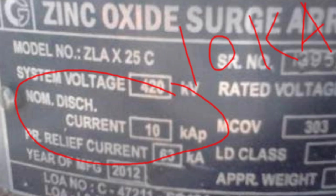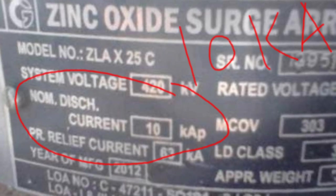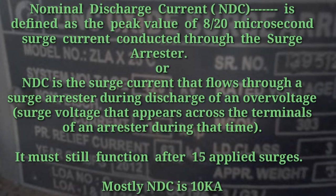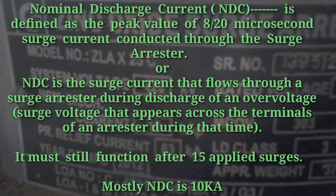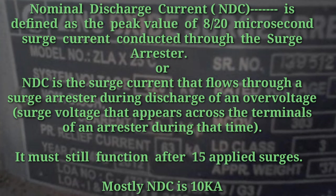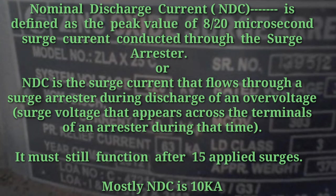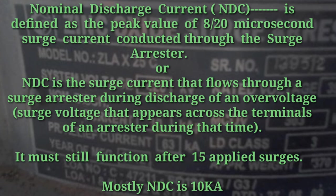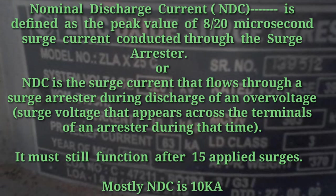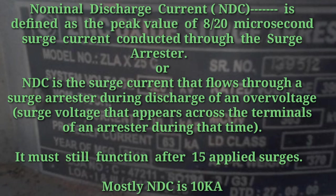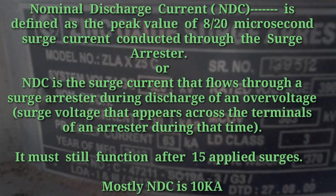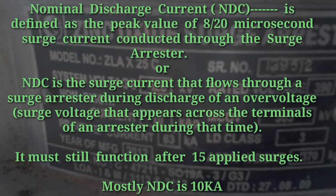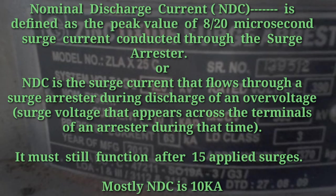Now nominal discharge current — here it is 10 kiloamperes. Nominal discharge current (NDC) is defined as the peak value of a 8/20 microsecond surge current conducted through the surge arrestor. Or NDC is the surge current that flows through a surge arrestor during discharge of an overvoltage. The surge voltage that appears across the terminals of an arrestor during that time — it must still function after 15 applied surges. Mostly NDC is 10 kiloamperes for higher ratings.